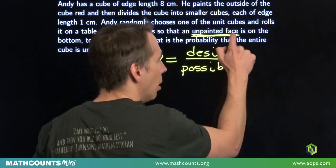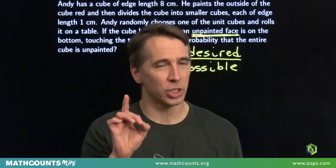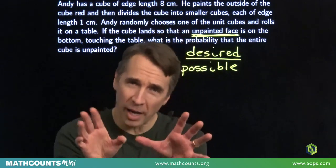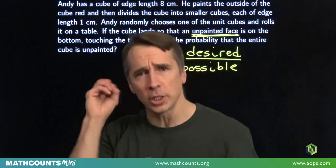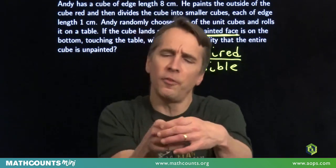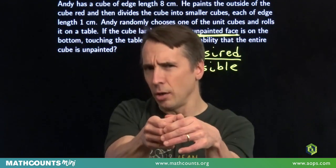So here, this information, this unpainted face, gives us information about which cube he chose. Now, if you don't buy that, let's take another way to think about this. From the very beginning, he reaches in, grabs a cube, rolls it, and there's a face sitting on the table. Well, all the faces of all of the unit cubes, they're all equally likely to be the one sitting on that table.